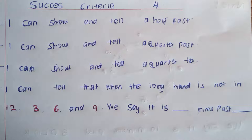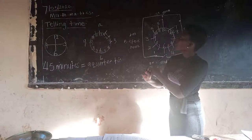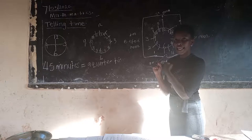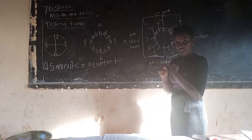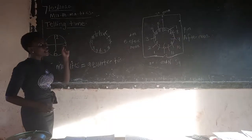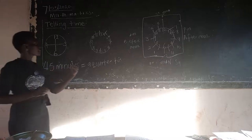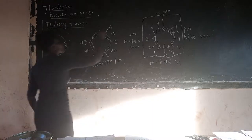When the long hand is not pointing to twelve, three, six, or nine, we say it is dash minutes past dash. We repeat this. If the long hand is not pointing to twelve, and is not pointing to three, and it's not going to six, and lastly it's not going to nine, we say dash minutes past dash. Today we are looking at a quarter to, and forty-five minutes make a quarter to.